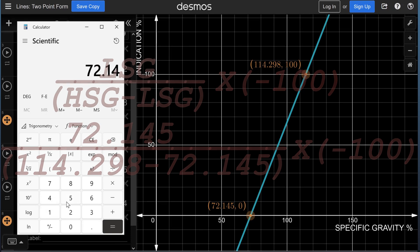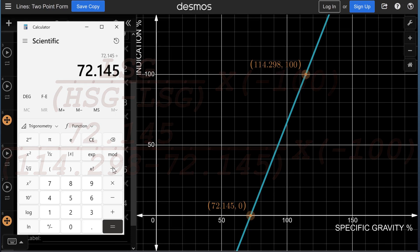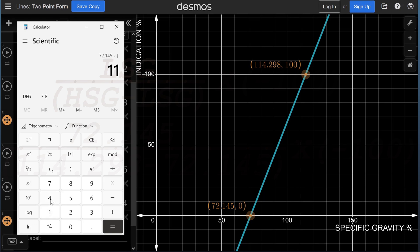We will put the lighter, 72.145, divided by the difference of the heavier, which is 114.298, minus the lighter, which is 72.145.